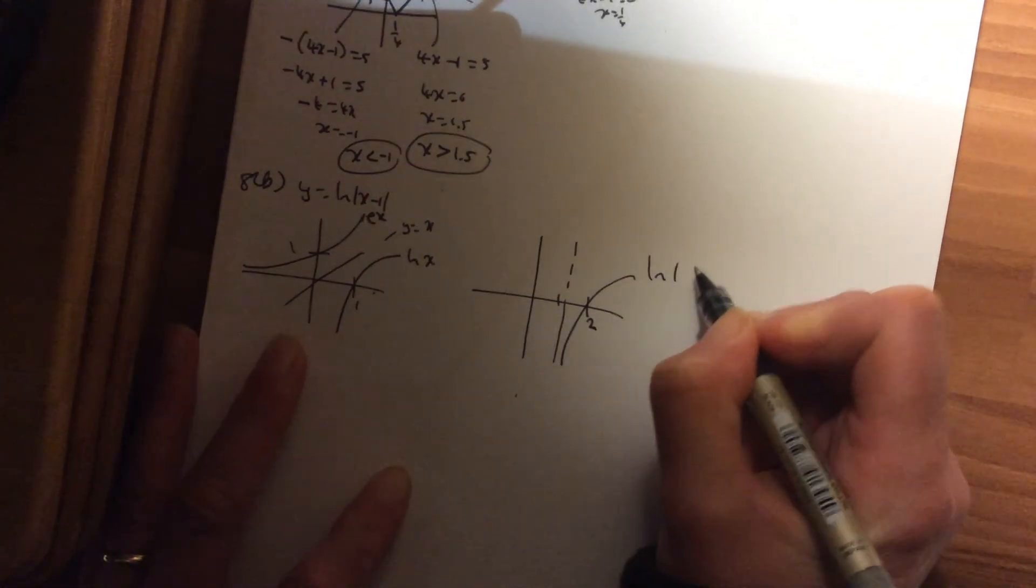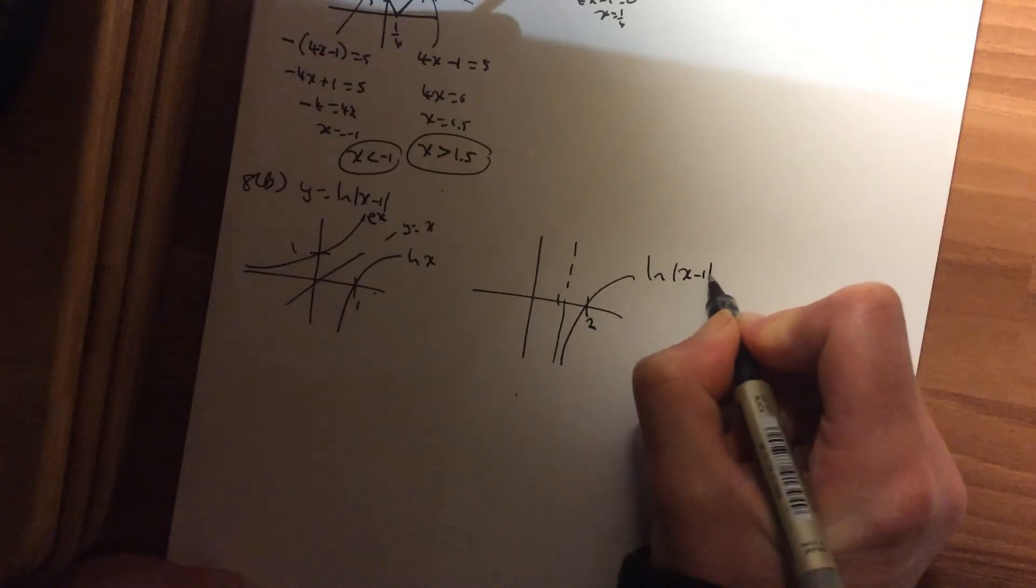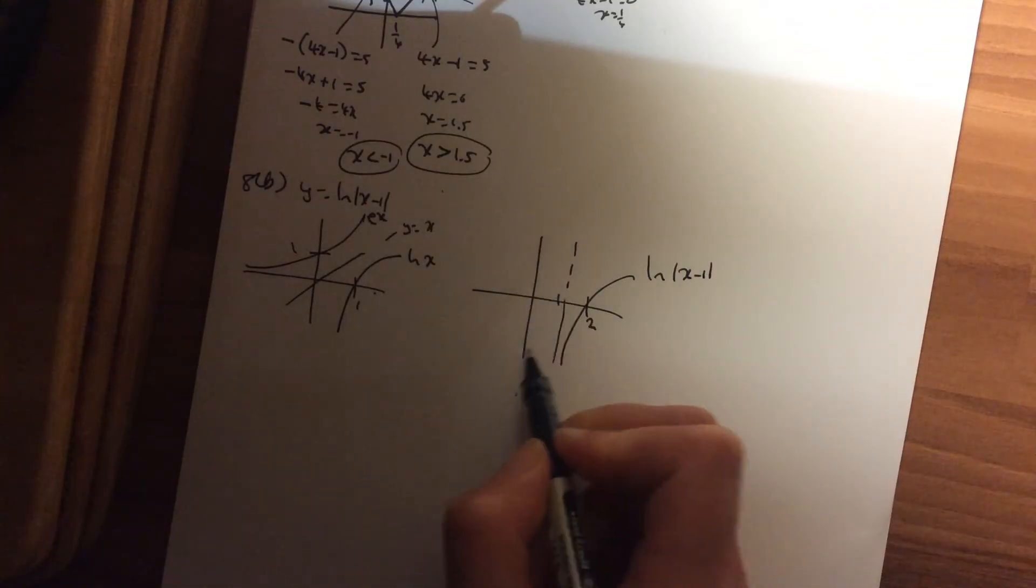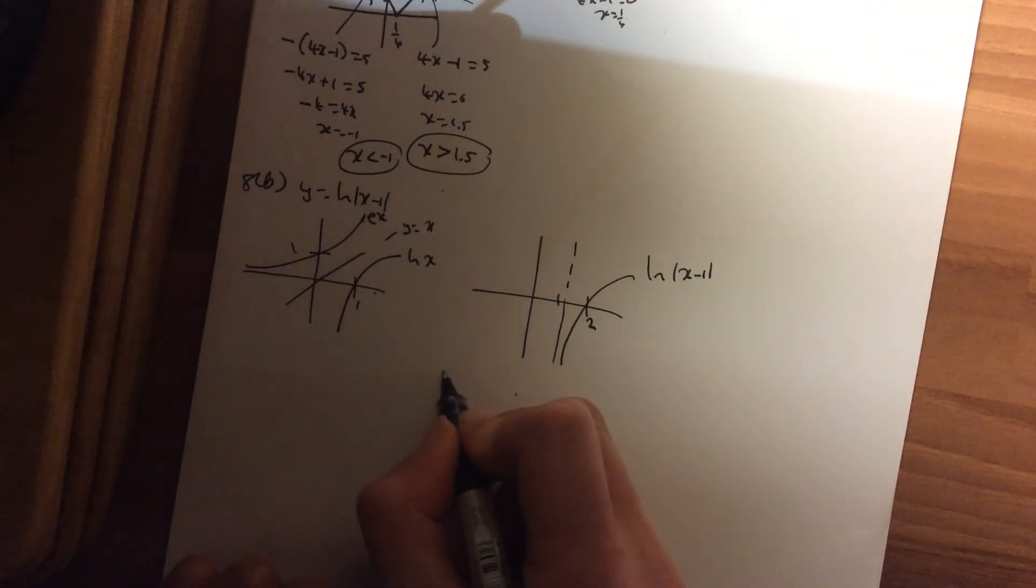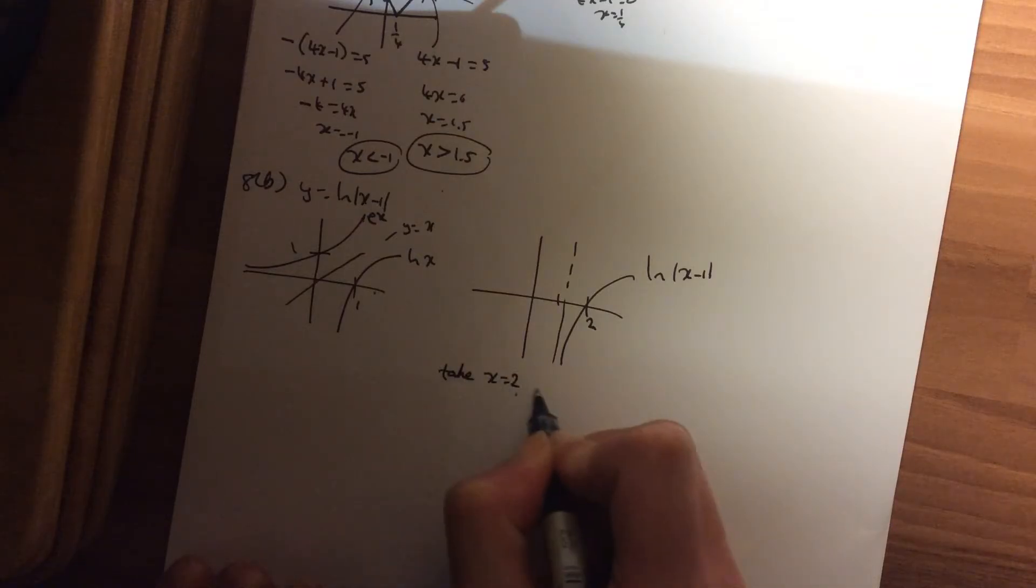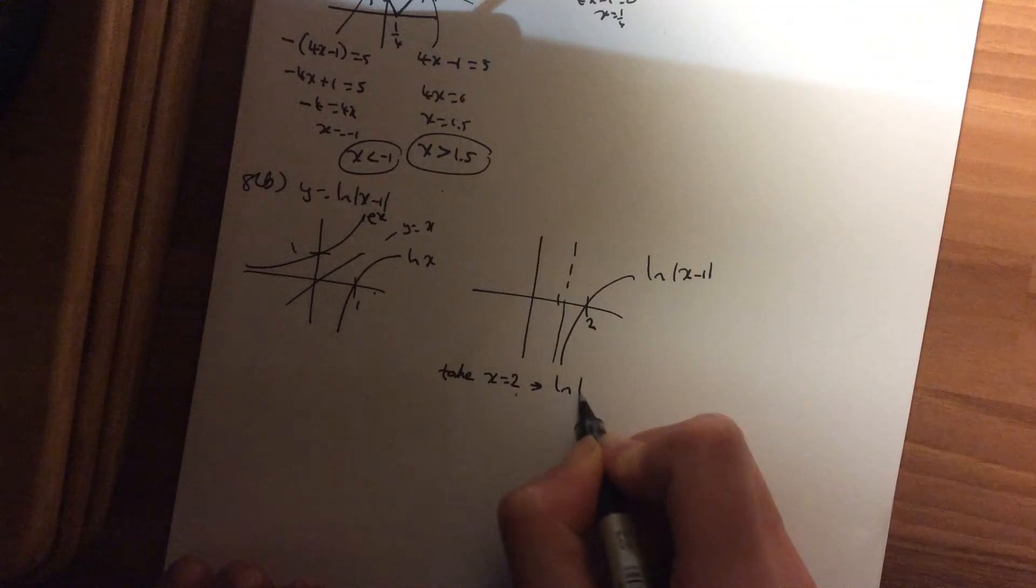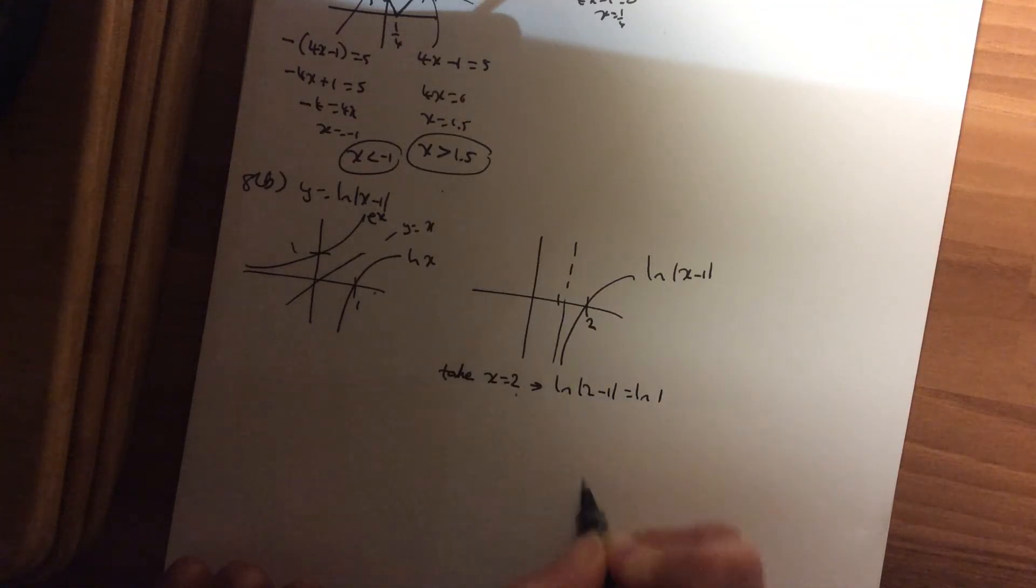Now, we need to have a rethink at this stage. Because what happens on this side? I want you to think of it as your point. So if you had x = 2 and you put it in, you get log(2 - 1), which is log 1.